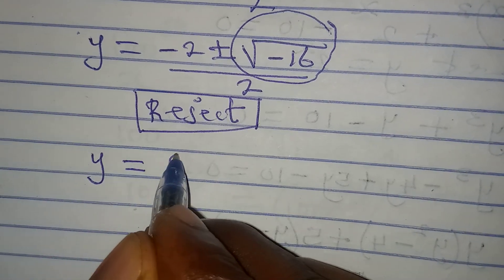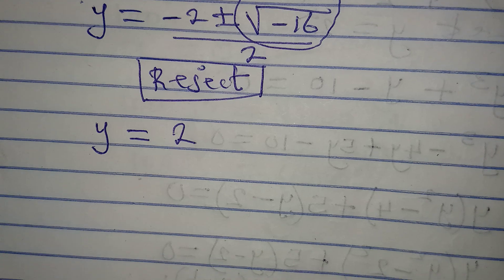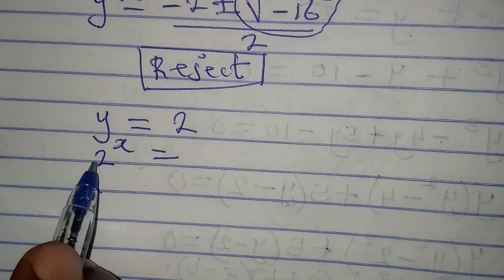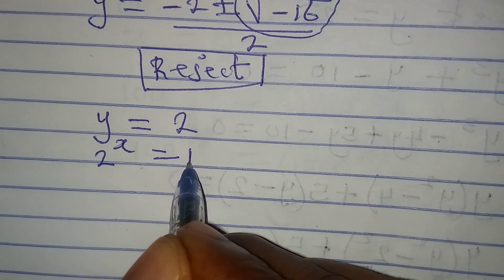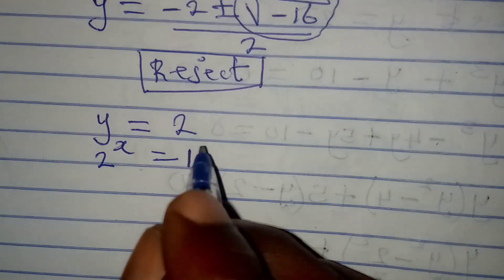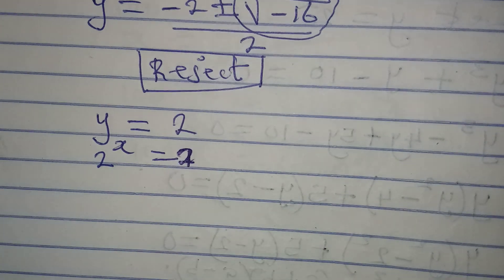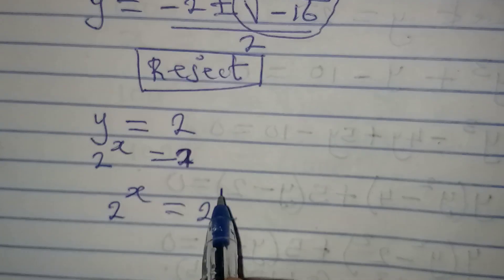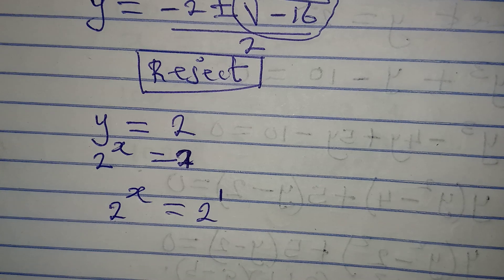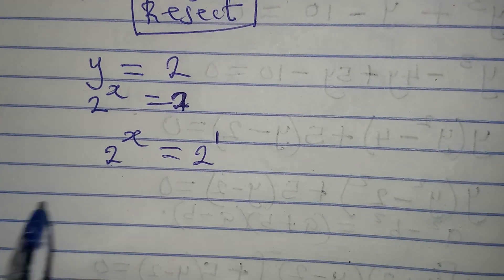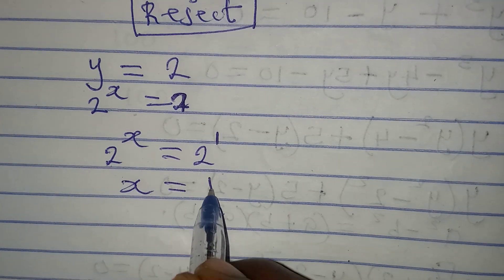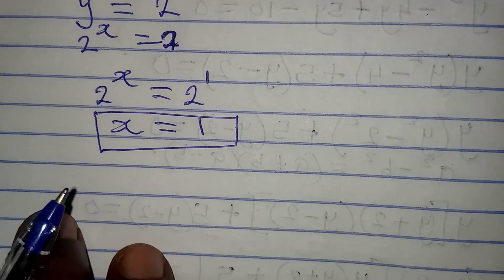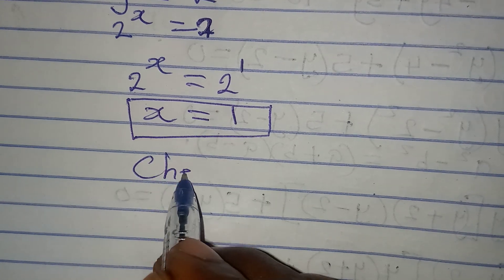Remember that we set 2 to the power of x equal to y. So now 2 to the power of x equals 2, which is the same as 2 to the power of x equals 2 to the power of 1. Since we have the same base, we can compare powers, so x equals 1. This is the value of x that satisfies the given equation.